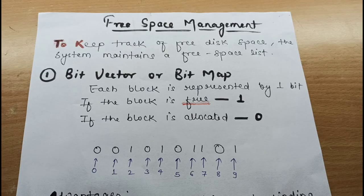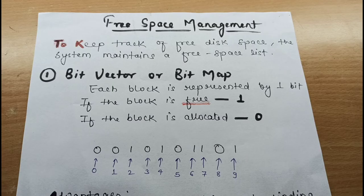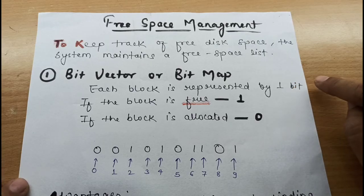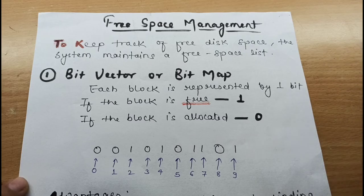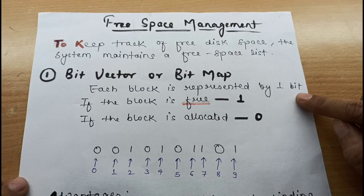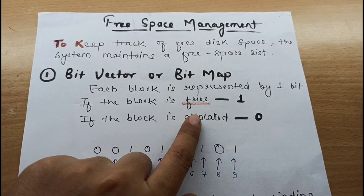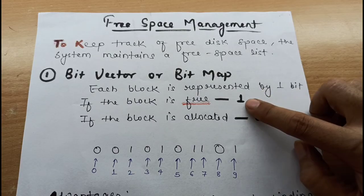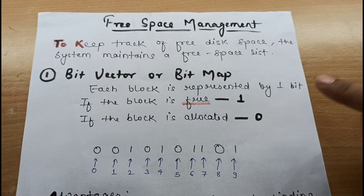There are several techniques for free space management. The first one is the bit vector or bitmap. Here, each block is represented by 1 bit. It is very simple and efficient: if the block is free, the bit is set to 1, and if the block is allocated to some file, the bit is set to 0.